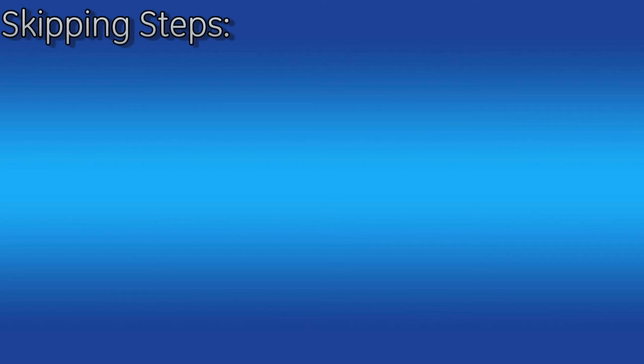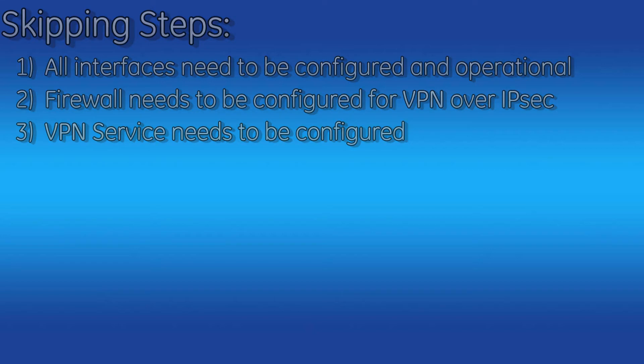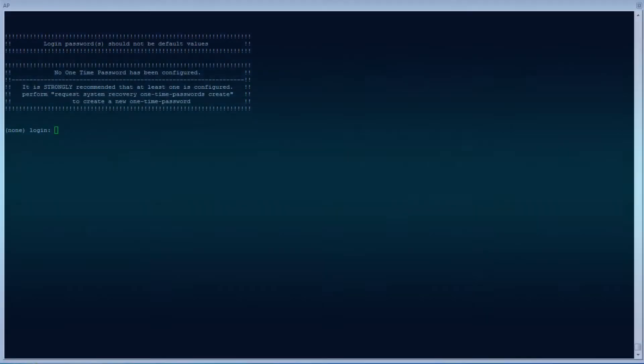First let's take a look at configuring the AP. Note that for this video we will be skipping steps 1, 2, and 3. We will assume that your bridge, 900 MHz, and cell interface have been configured and are operational. We will also be assuming that you have an IPSec tunnel established between the remote and the AP over the cell link. If you have not done this yet or need instructions on this topic, please see our IPSec videos first.